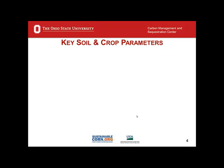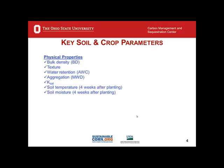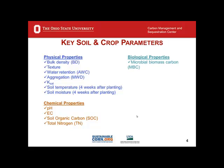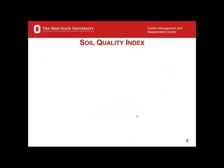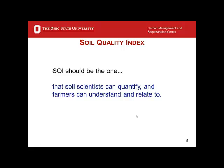The key soil crop parameters which impact soil quality are many, including physical properties such as bulk density, texture, water retention, available water capacity, aggregation, mean weight diameter, saturated hydraulic conductivity, soil temperature, and soil moisture. There is a range of chemical properties like pH, electrical conductivity, soil organic carbon, and total nitrogen; and biological properties such as microbial biomass carbon and biodiversity; and crop parameters such as grain yield, biomass, stover yield, root growth, and harvest index. These properties have to be selected and converted into a simple numerical index.